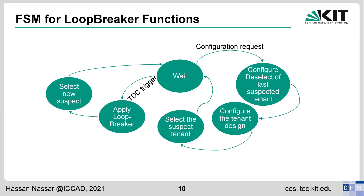To manage both normal reconfigurations and Loop Breaker reconfigurations, we use a finite state machine. Normally the system stays in the wait state. If a new reconfiguration request comes in, it deselects the last suspected tenant, reconfigures the new tenant design, and reselects the suspect tenant. If an attack is detected, it applies the Loop Breaker solution and then selects a new suspect tenant. The selection of the new suspect tenant is not part of our contribution but can be based on bitstream analysis shown in prior works.